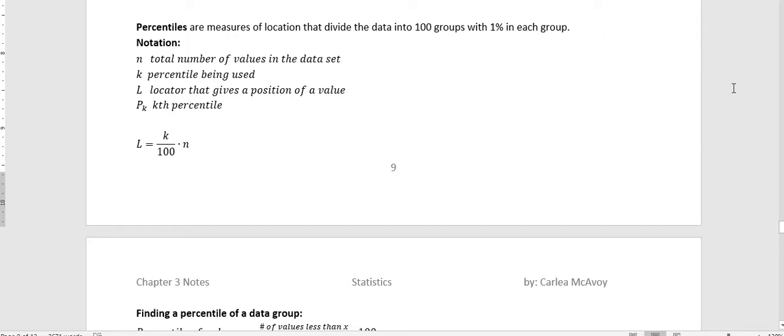Percentiles are measures of location that divide the data into 100 groups with 1% in each group. So there's some notation that you want to know. n is the total number of values in the data set, k is the percentile being used, L is locator that gives the position of the value of the data when it's organized from least to greatest, and then p sub k is the kth percentile.